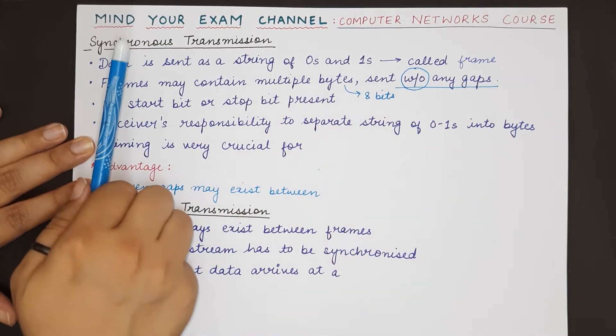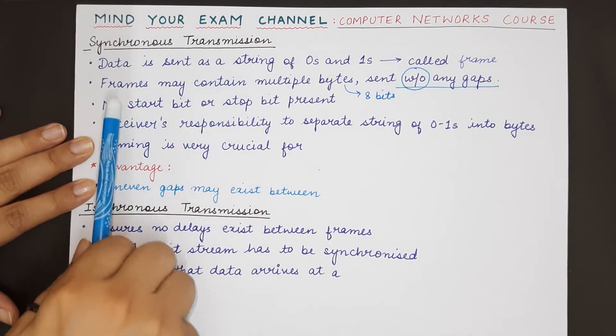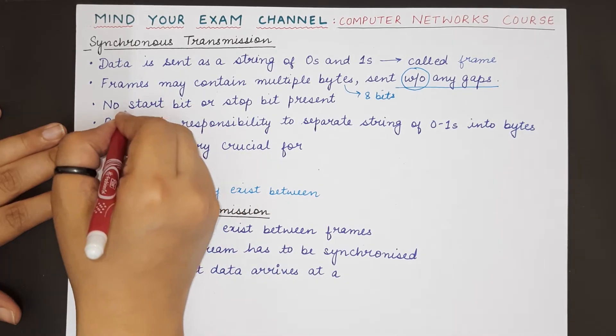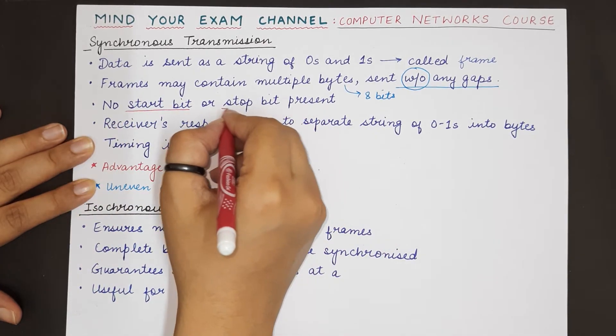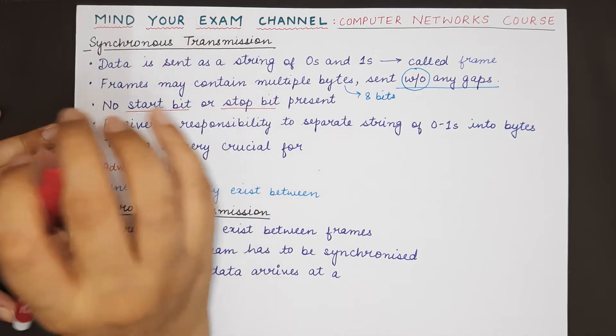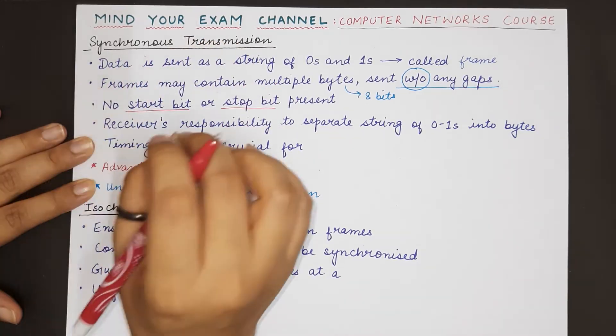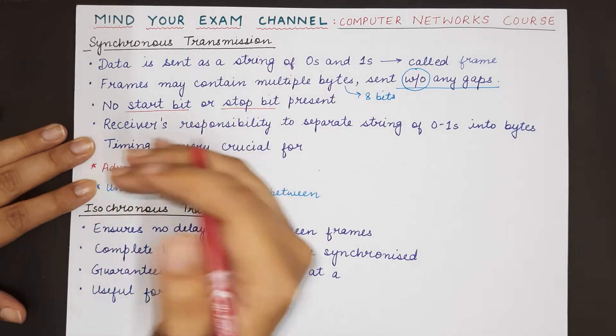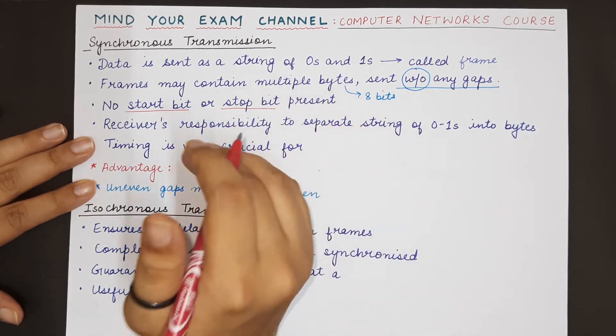In synchronous transmission there is no explicit start or stop bit. The sender is not telling the receiver when the communication is starting and when it is ending.